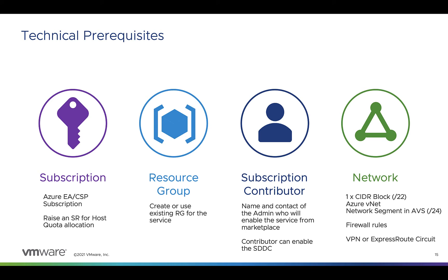Finally, you need to think about network requirements. You'll need a /22 network to deploy AVS. That address space is carved up into smaller subnets used for vCenter, NSX-T, vMotion, and HCX. That block should not overlap with any existing network segment you have on-premises or elsewhere in Azure.